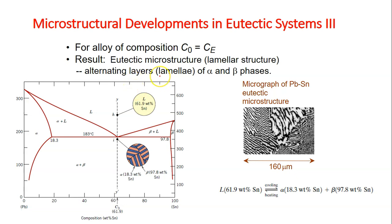For this third case, we are considering the microstructures which develop along the composition of eutectic line or eutectic region, which is 61.9 weight percent of tin. This is the eutectic composition.